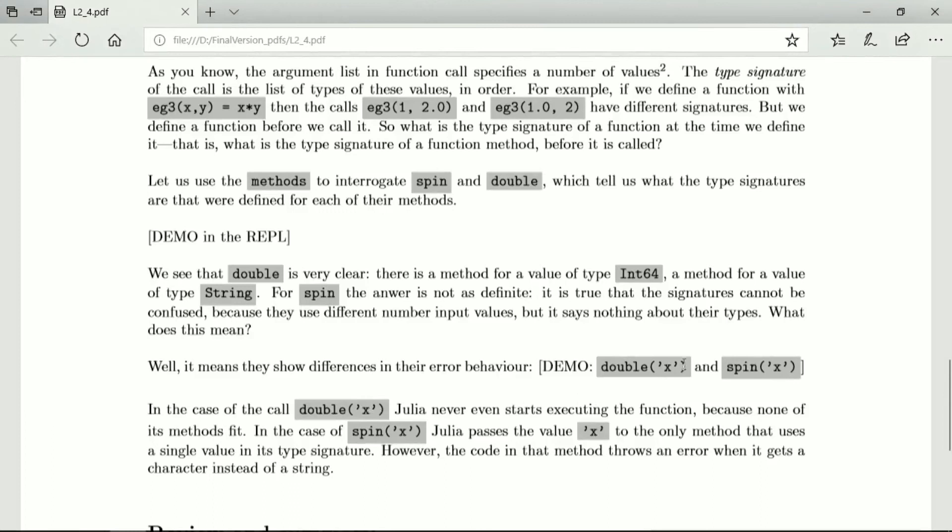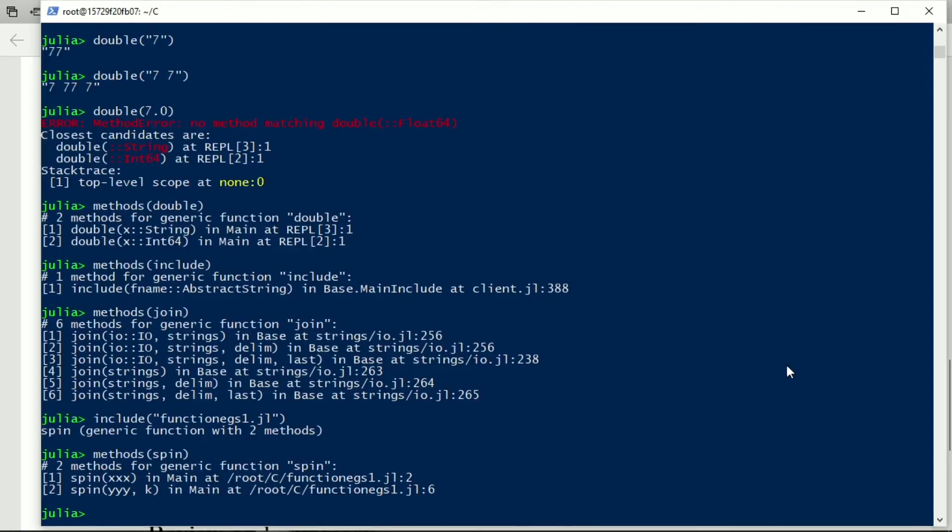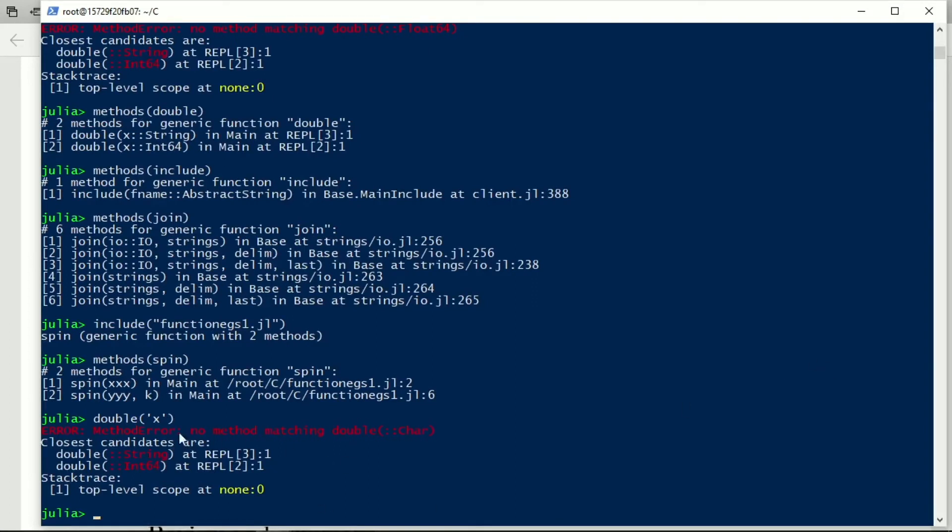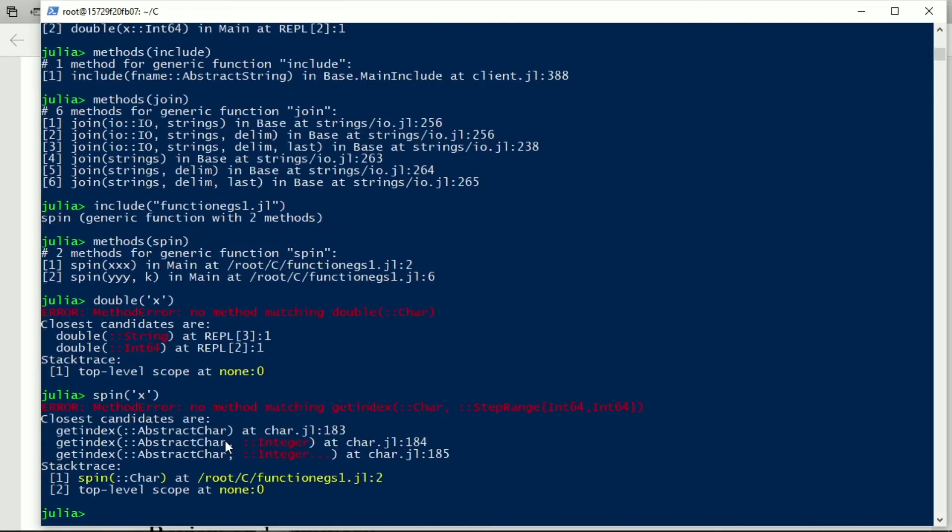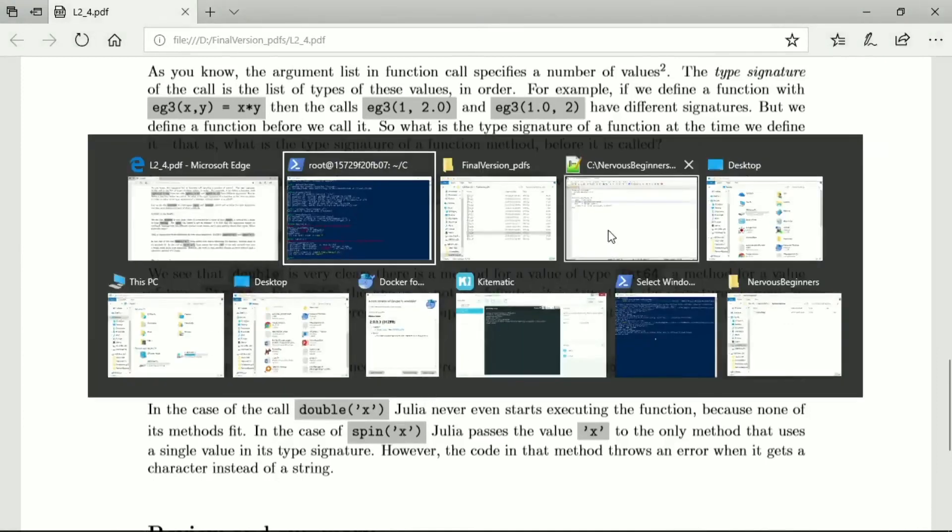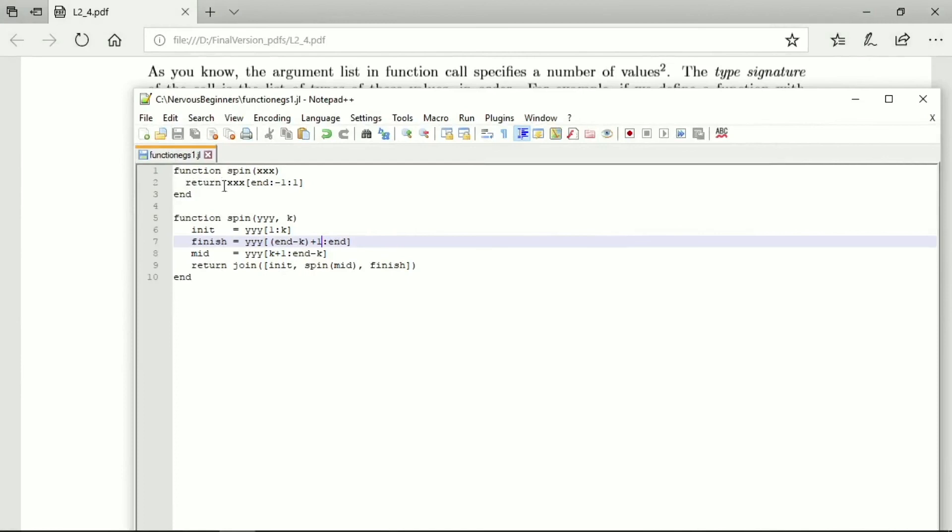So let us now compare the errors that happen if we want to double the character, or if we want to spin the character. So if we want to double the character x, then it says there is no method. It cannot find a method, and so it's not going to do anything. But if we say we want to spin the character x, then what happens is that we are trying to call this method here, and it says we're actually trying to get the index of a character. So we'd have to go into the code of the spin, which we have over here, and it says that here we are trying to get an index.